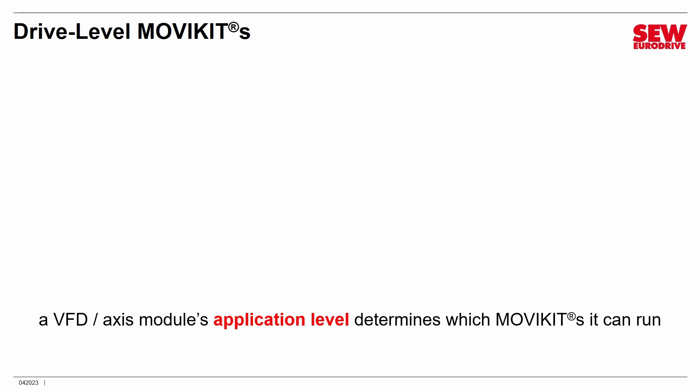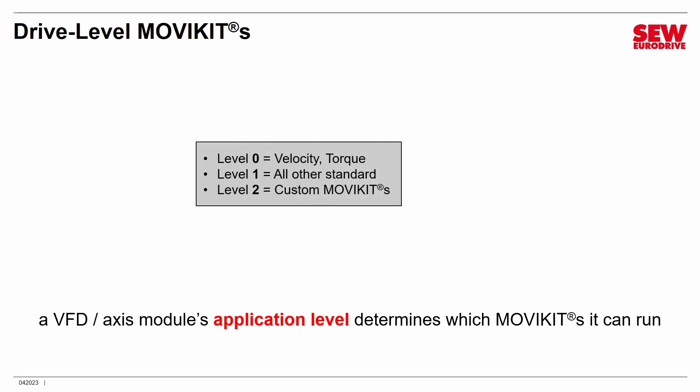A VFD or access module's application level determines which MoVC kits it's able to run — in other words, which ones are free and which ones you pay for. There are three application levels: level 0, level 1, and level 2, and here are the MoVC kits that can run at each level.